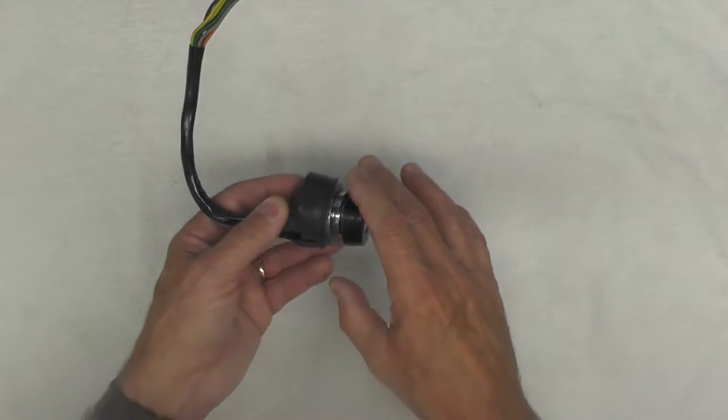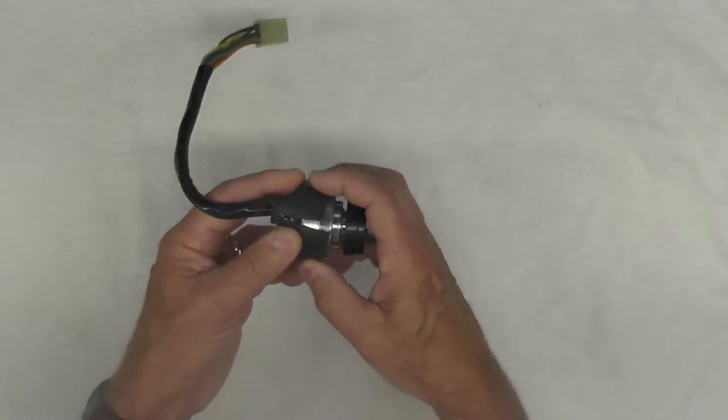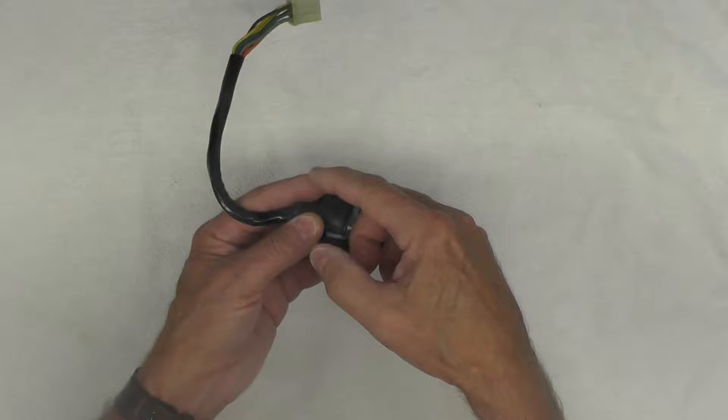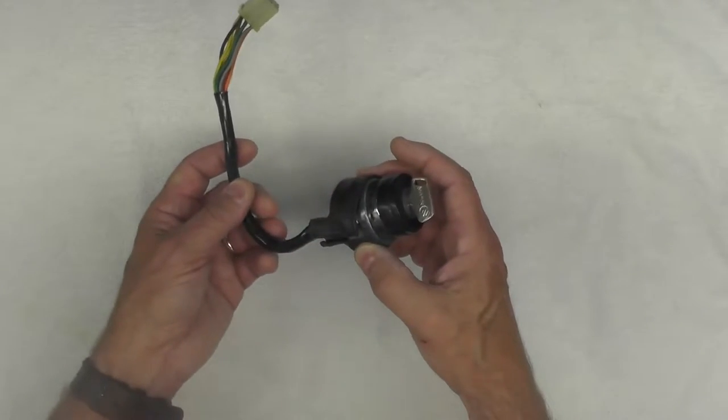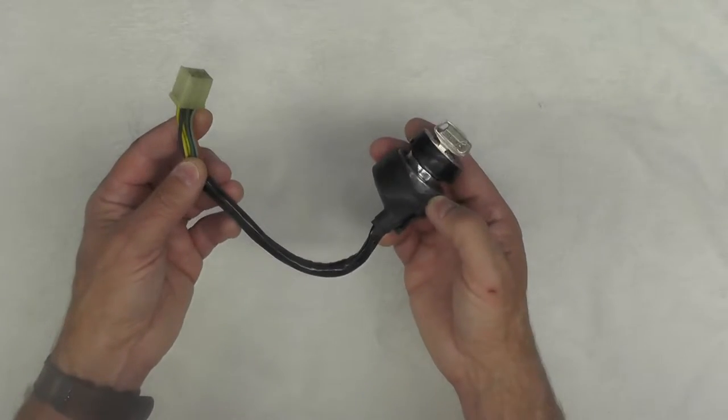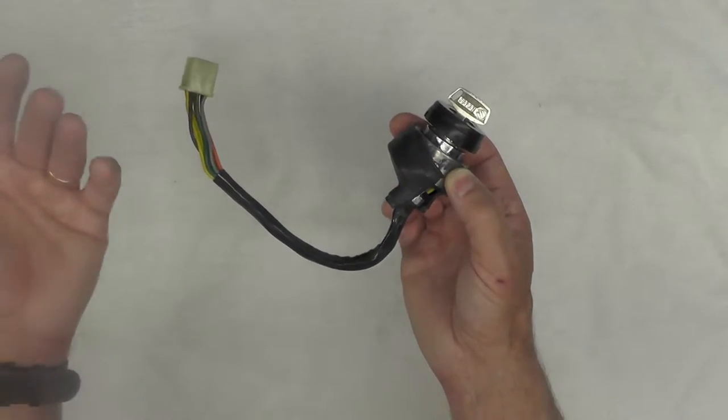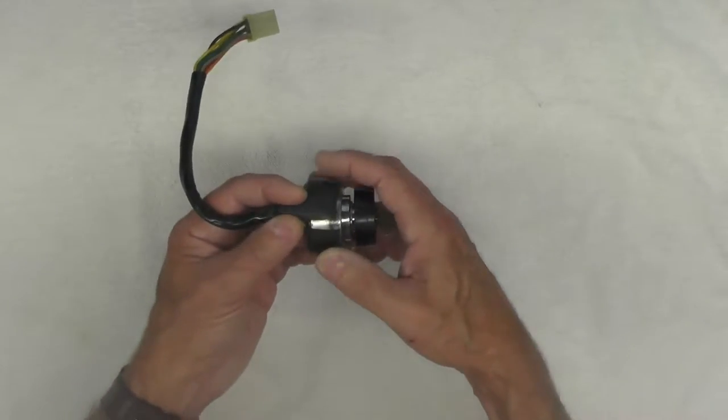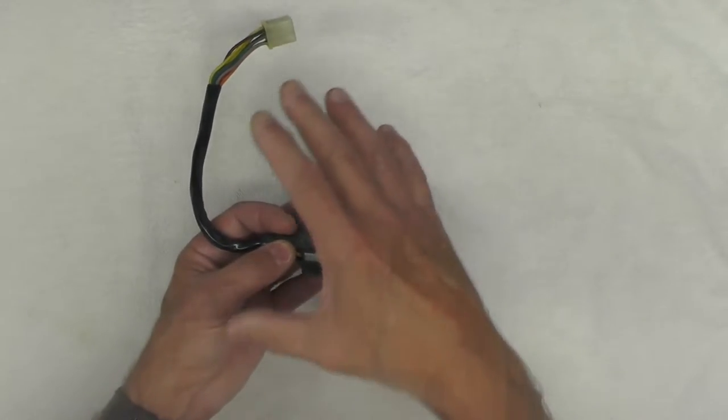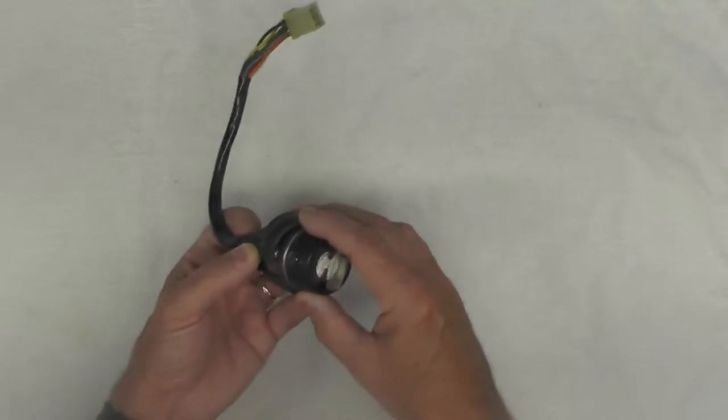I did test it with my meter and all the connections work as they should according to the wiring diagram and the service manual that I have. And it did work on the bike. Everything worked. The lights worked. Obviously the ignition worked because I ran the bike. So I'm confident everything is working in this switch.